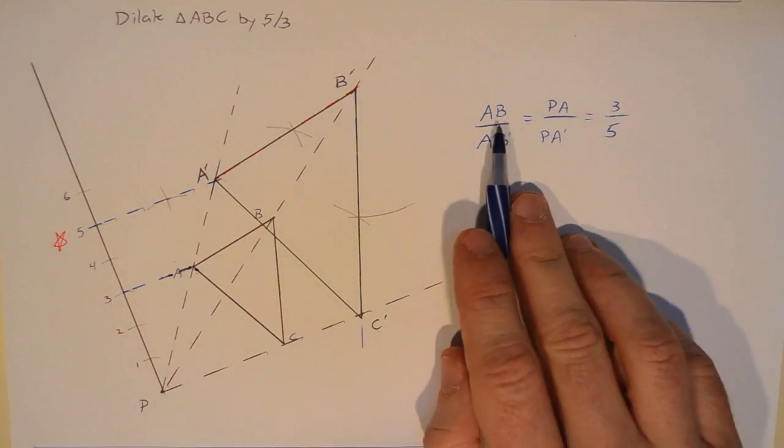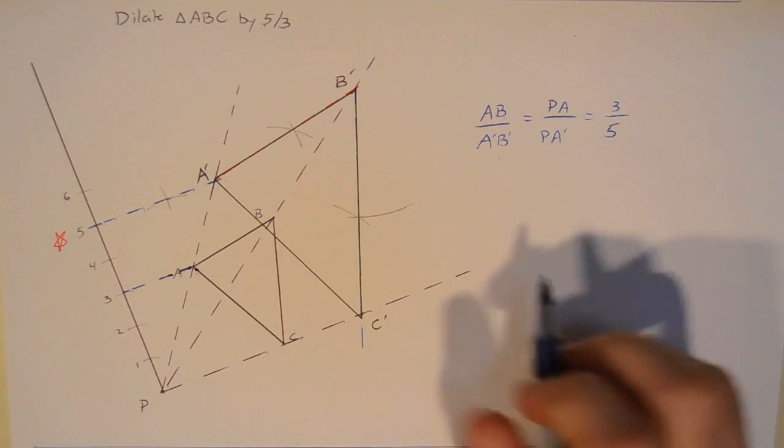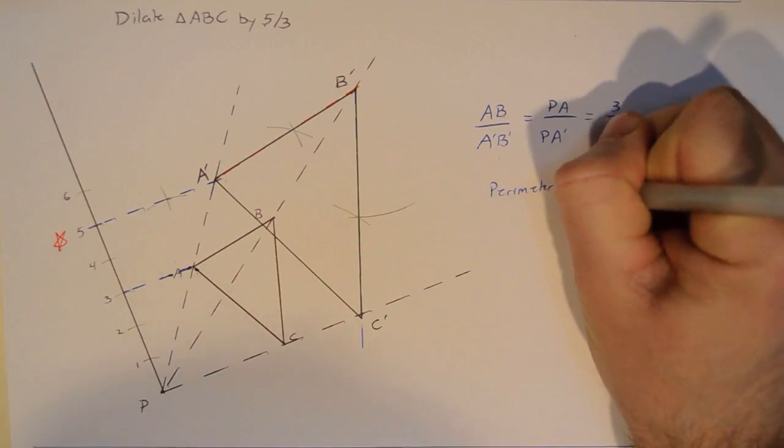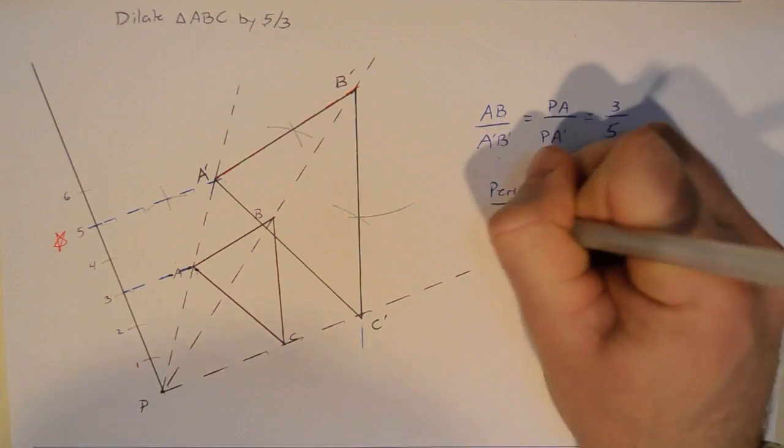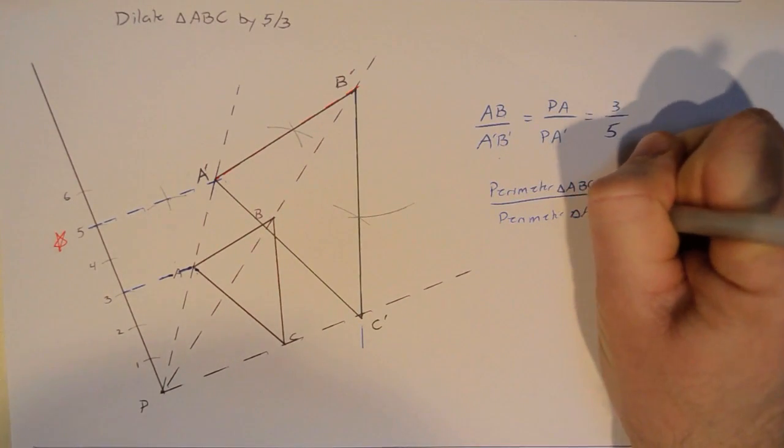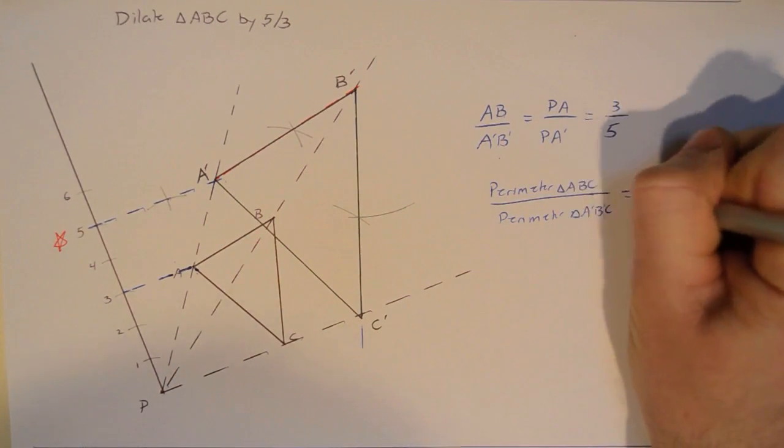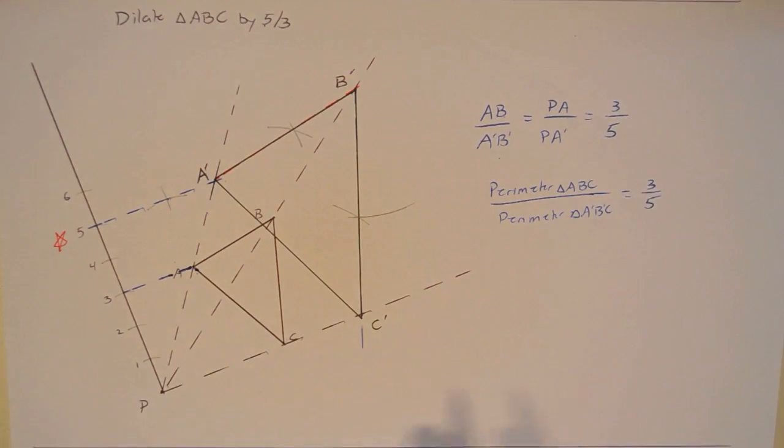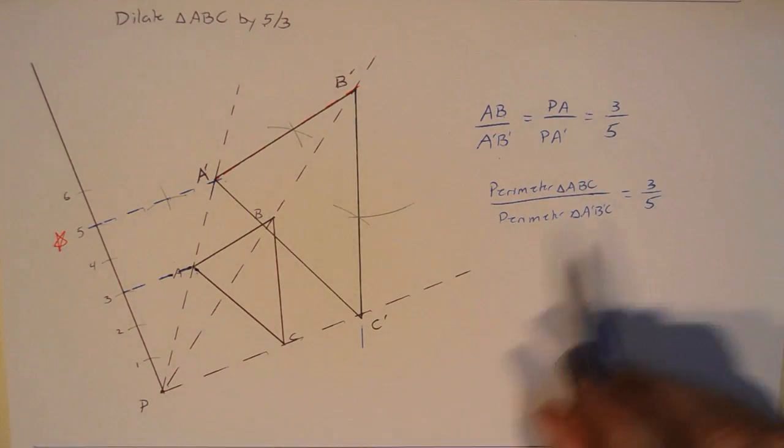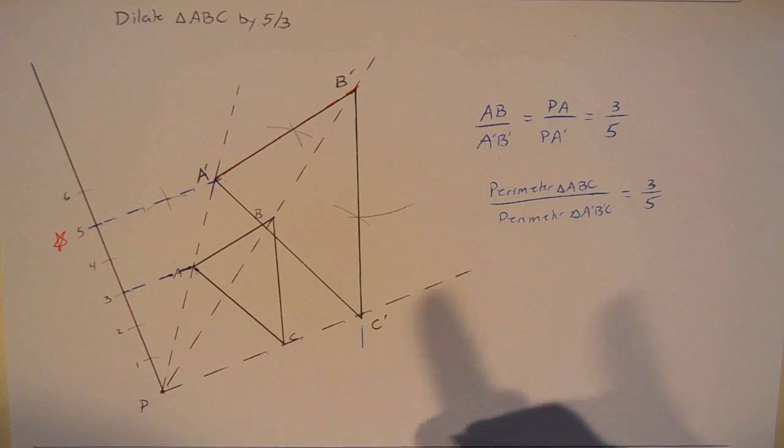So this is the ratio between AB and A prime B prime. That's also going to be the ratio of the perimeter of triangle ABC to the perimeter of triangle A prime B prime C prime. Because if you think about what perimeter is, it's just adding up the three lengths of the sides. So if the sides are all 3 fifths in the ratio, then the perimeters also have to be in the ratio 3 fifths.